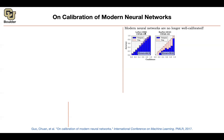LeNet from 1998, on MNIST data, you see that the blue and the red lines are lying on top of each other — it means LeNet was well calibrated. While ResNet from 2016 is not; there is a gap between the blue curve and the y equals x line. But what are we actually plotting here? Let's go into the math to understand what calibration means and why it's a good thing.